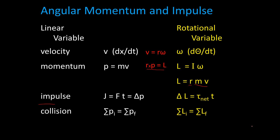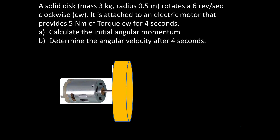Let's take a look at a couple of examples. First one: we have a solid disk, mass 3 kilograms, radius 0.5 meters, rotating at 6 revolutions per second clockwise. It is attached to an electric motor that provides 5 newton meters of torque clockwise for 4 seconds. We have two things: one, calculate the initial angular momentum, and two, determine the angular velocity after 4 seconds.